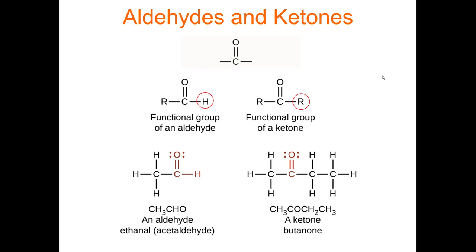Let's move on to functional groups that contain a carbonyl group. A carbonyl group is C double bond O, and there are lots of functional groups with this bonding pattern. They're different functional groups because of what comes on the left and right of the carbonyl. We'll start with aldehydes and ketones. An aldehyde has a carbonyl, and on one side it has an H. There's one instance where an aldehyde has two H's — that's called formaldehyde, the simplest aldehyde. As long as there's one H next to the carbonyl, we call that an aldehyde.